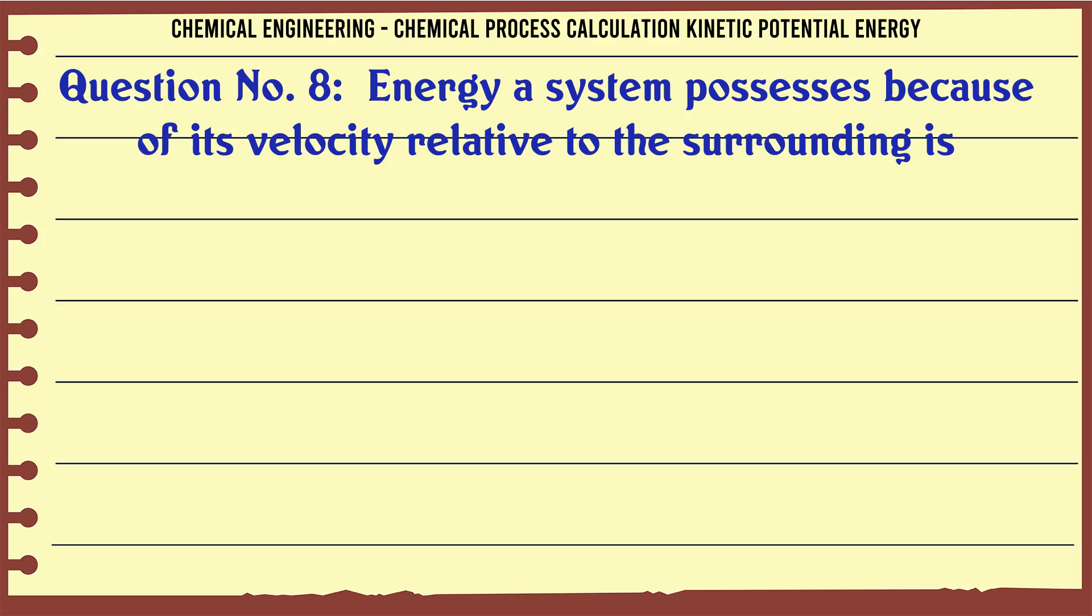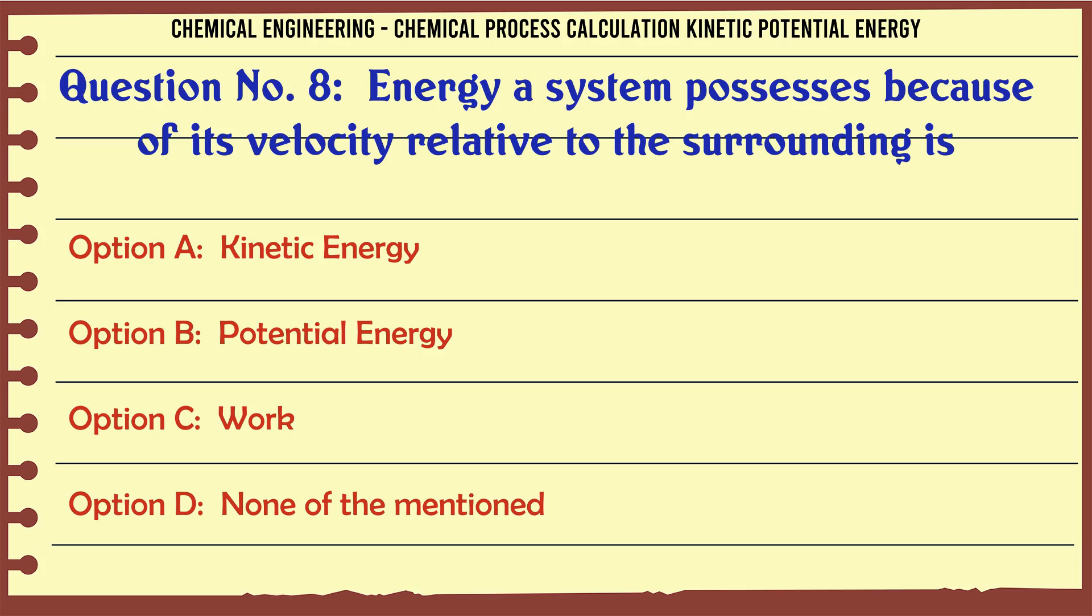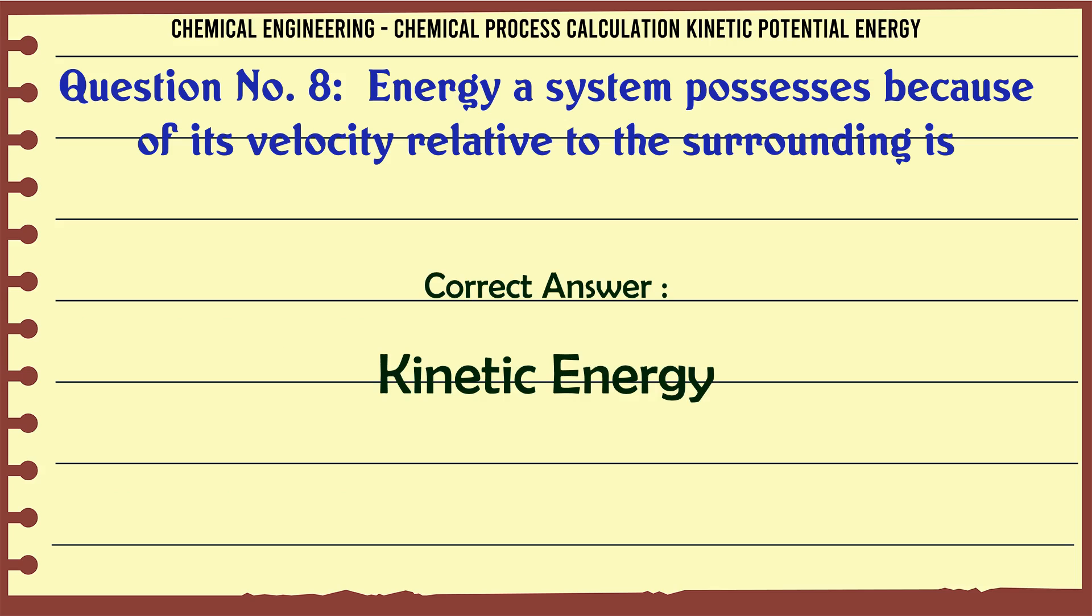Energy a system possesses because of its velocity relative to the surrounding is: A: Kinetic energy. B: Potential energy. C: Work. D: None of the mentioned. The correct answer is Kinetic energy.